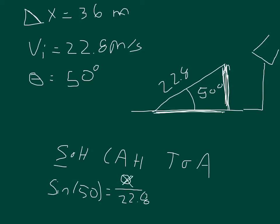I'll just put an X there as the general unknown. We can multiply both sides by 22.8. So 22.8 times sine 50 is going to equal my V initial in the Y direction. That actually gives me an initial vertical velocity of 17.465 meters per second.